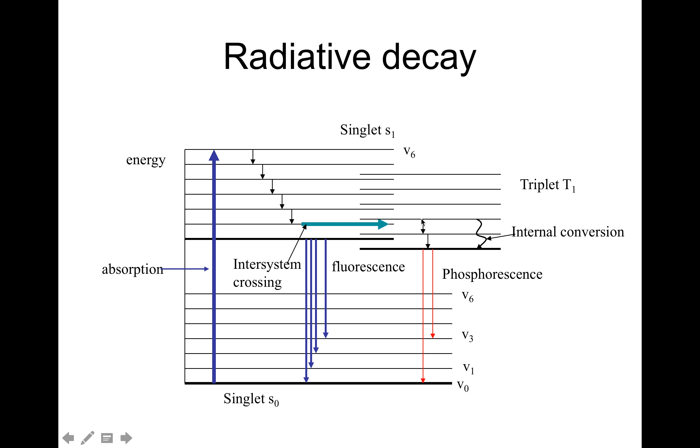Now, in the triplet system, we still can have leaks occurring until we come to the lowest vibrational level and then we can jump back to the lowest vibrational level of S0. So that's phosphorescence occurring.